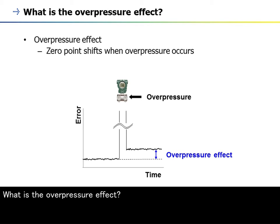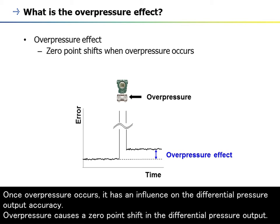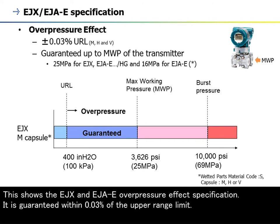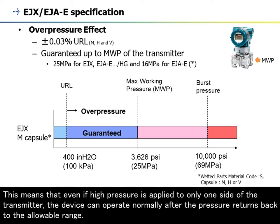What is the overpressure effect? Once overpressure occurs, it has an influence on the differential pressure output accuracy. Overpressure causes a zero-point shift in the differential pressure output. This shows the EJX and EJAE overpressure effect specification. It is guaranteed within 0.03% of the upper range limit, meaning that even if high pressure is applied to only one side of the transmitter, the device can operate normally after the pressure returns back to the allowable range.